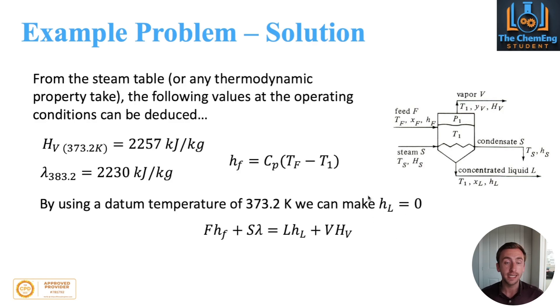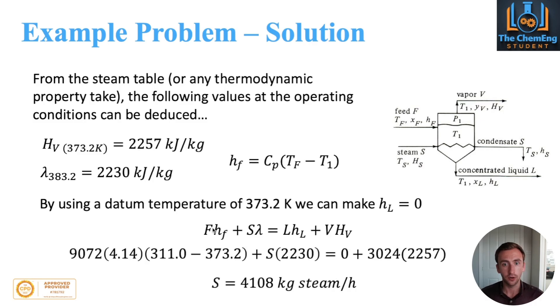Taking whatever datum temperature you want can really simplify the equations. All it will influence is the values of the physical properties. Now from here, all you have to do is substitute in the values into this equation, and we work out that the amount of steam required for this operation is 4108 kilograms per hour. So that's the amount of steam that we are going to require.